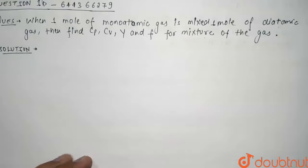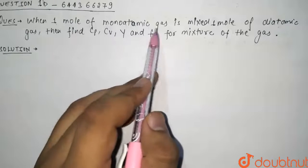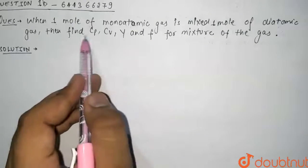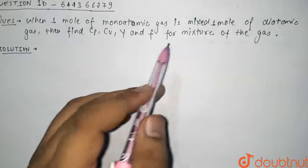Hello, so today's question is: when one mole of monatomic gas is mixed with one mole of diatomic gas, then find Cp, Cv, gamma, and F for the mixture of the gas.